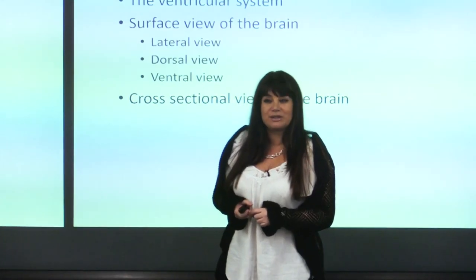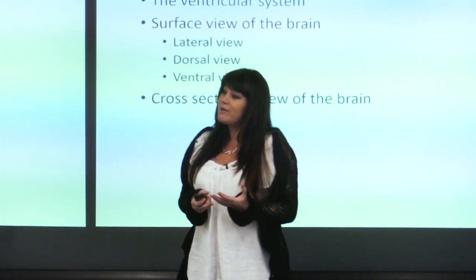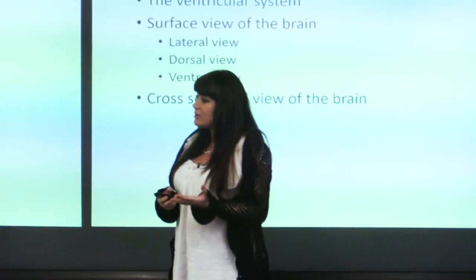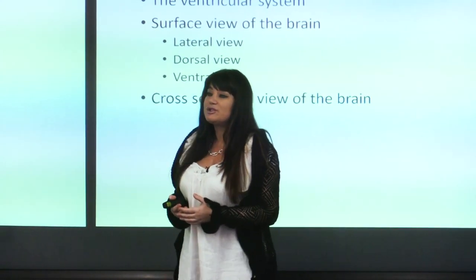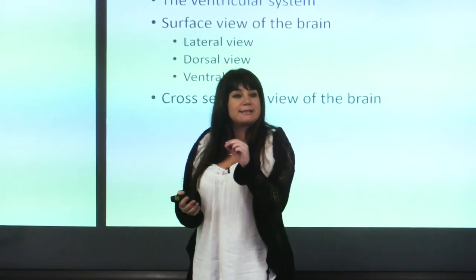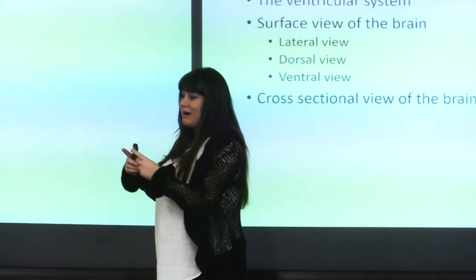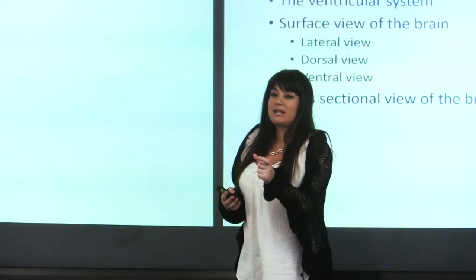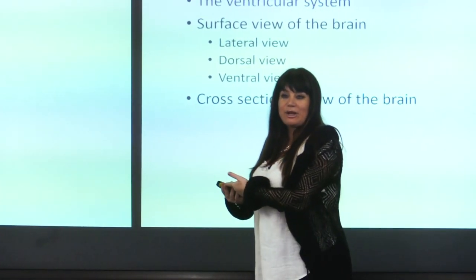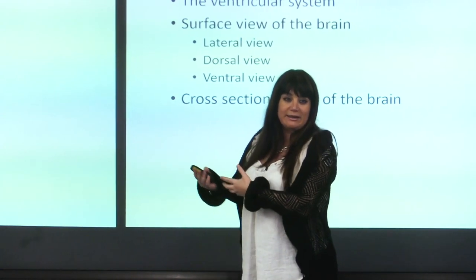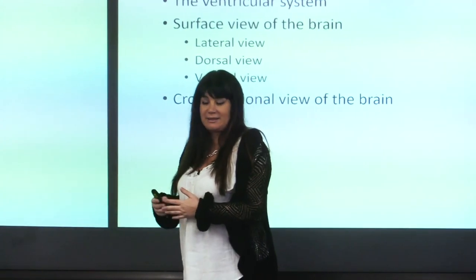Why is information about brain structure important? Later, when we talk about mental disorders, I'll explain, for example, that there is a brain region called hippocampus or limbic system, and something is going wrong there — some over-activation in that circuitry. You need to know where it is located in the brain. That's why you need to know these structures in order to understand the upcoming classes.